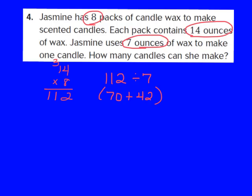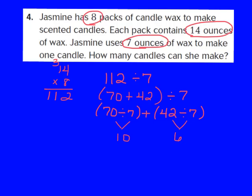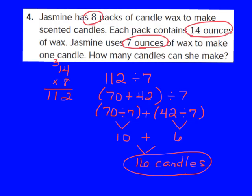I have 70 plus 42, and I'm going to divide that by 7. Breaking it down further: 70 divided by 7 plus 42 divided by 7. I now have two simpler division problems. I know that 70 divided by 7 gives me 10, and 42 divided by 7 gives me 6. My last step is to add 10 and 6 together, which gives me 16. So Jasmine can make 16 candles, and I've used the strategy Solve a Simpler Problem to find that answer.